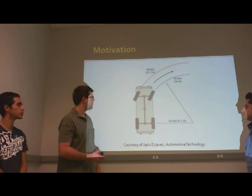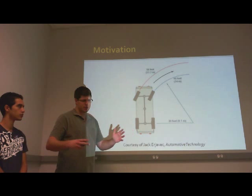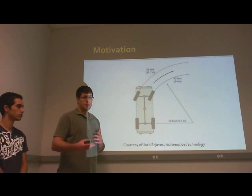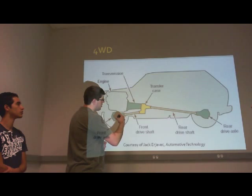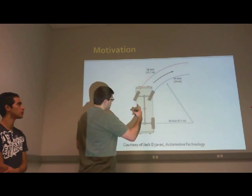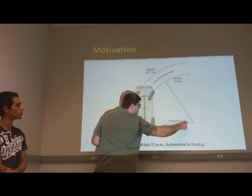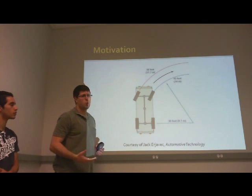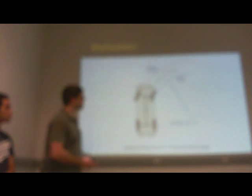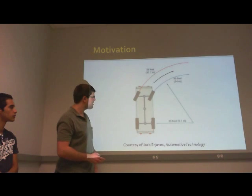The motivation for the differential: basically it takes one input and creates two outputs. These two outputs can be in any orientation relative to the input. Another purpose they serve is related to turning. When a car is turning, every wheel has a different turning radius — the front wheels have different radii from each other, and each front wheel has a different radius from the rear wheels. In other words, all four wheels are spinning at different angular velocities, even though the car as a rigid body can only have one angular velocity.